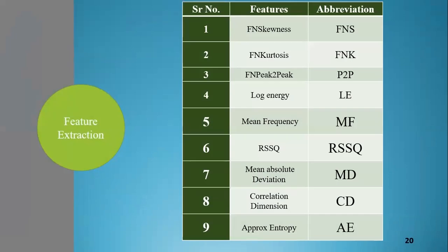Moving to feature extraction. For a signal classification system to exhibit better performance, feature extraction plays a critical role. Through extensive experimentation, we identified a powerful feature vector consisting of nine features: FN skewness, FN kurtosis, FN peak-to-peak energy, log energy, mean frequency, RSSQ, mean absolute deviation, correlation dimension, and approximate entropy.